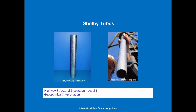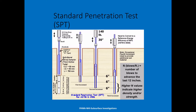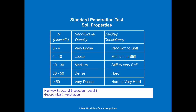We get soil samples by Shelby tubes — we drive the tubes in the ground to get our sample. We also have the standard penetration test, where we drive a rod into the ground with a set weighted hammer with a set fall, and record the number of blows to advance the last 12 inches, recording those as an N value on your plans. An N value of 0–4 is very loose in sand and gravel, or soft to very soft in silt and clay. An N value of 10–30 is medium density sand and gravel, or stiff to very stiff silt and clay. These help you determine what type of material you're working with.